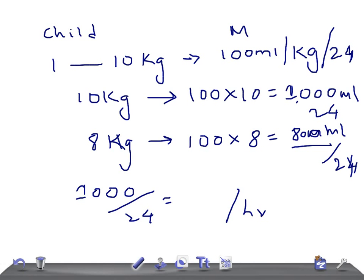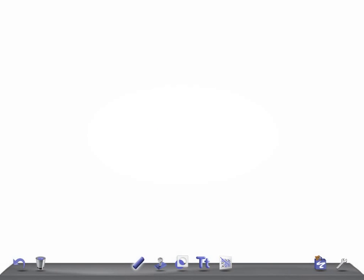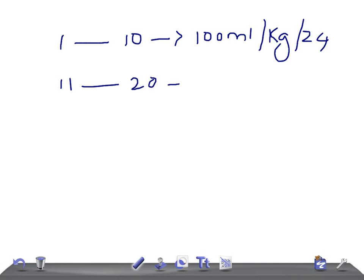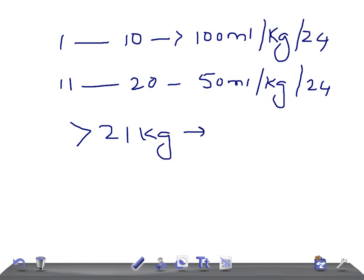For 1 to 10 kg: 100 ml per kg per 24 hours. For 11 to 20 kg: 50 ml per kg per 24 hours. For children more than 21 kg: 20 ml per kg per 24 hours.